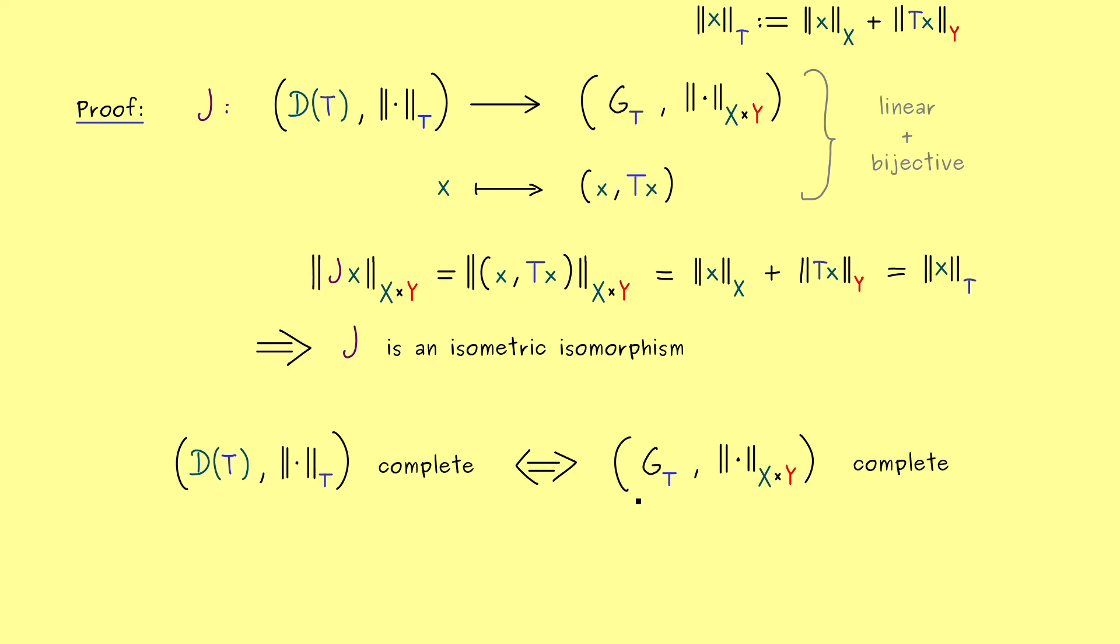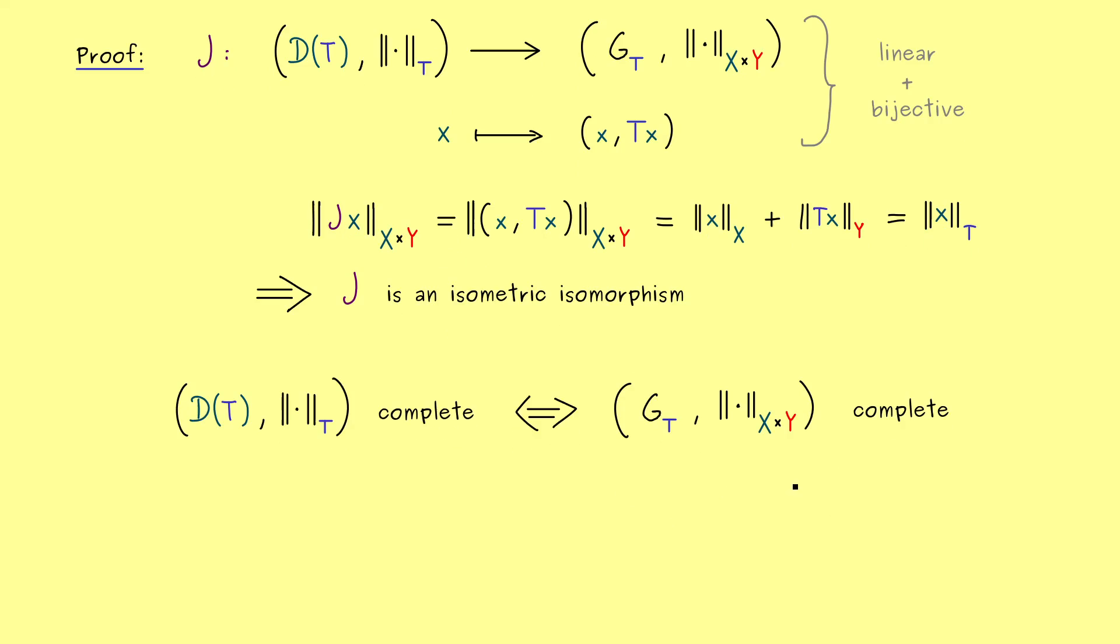However this is definitely a subspace in the Banach space X times Y and therefore completeness is equivalent to closeness. And now you might remember this closeness of the graph in X times Y was exactly what we used for the definition of a closed operator.